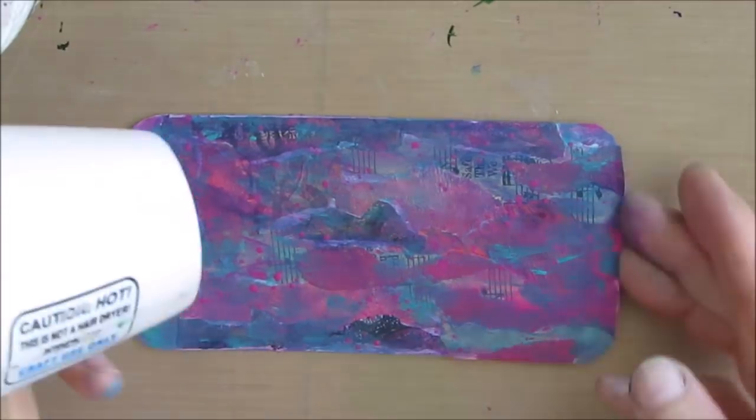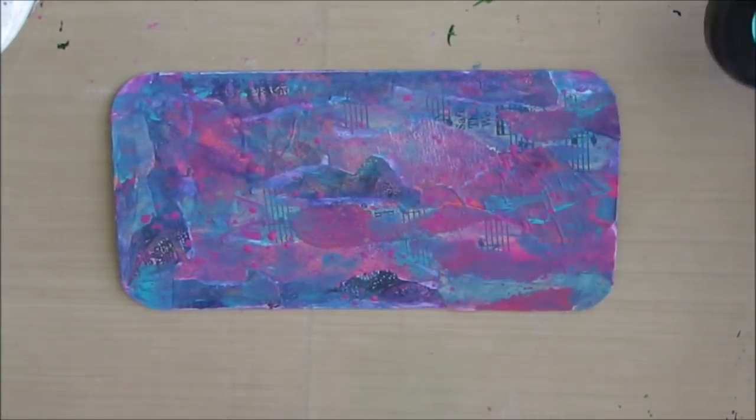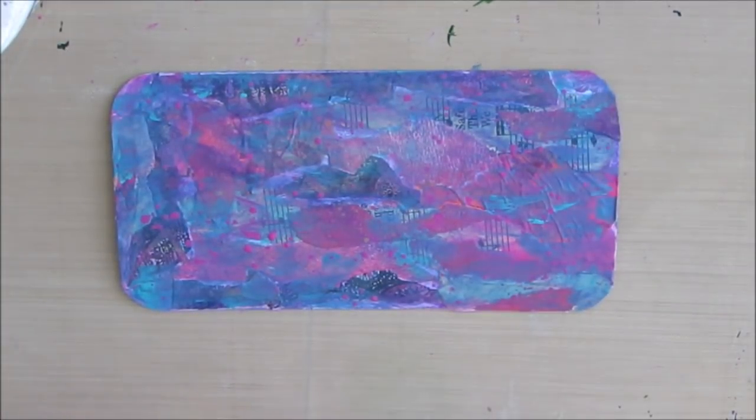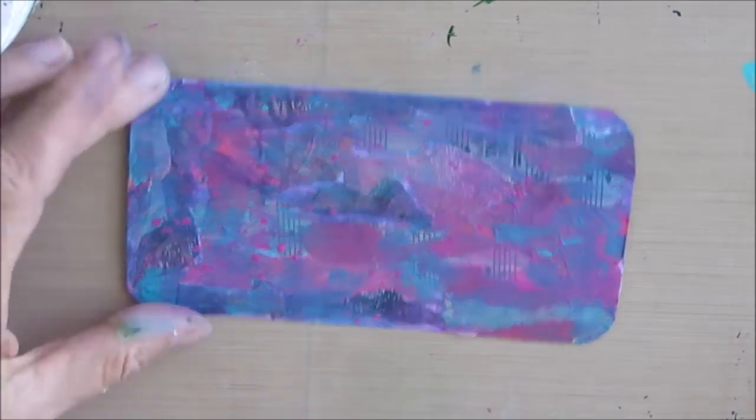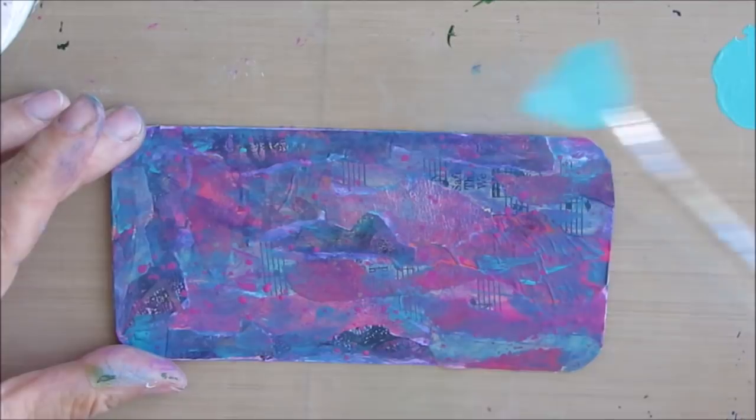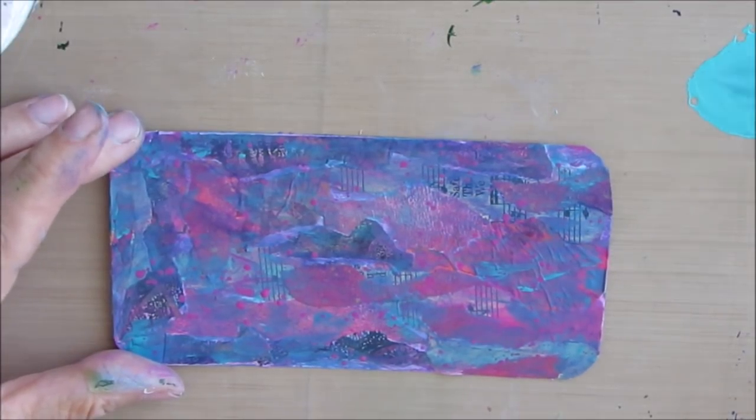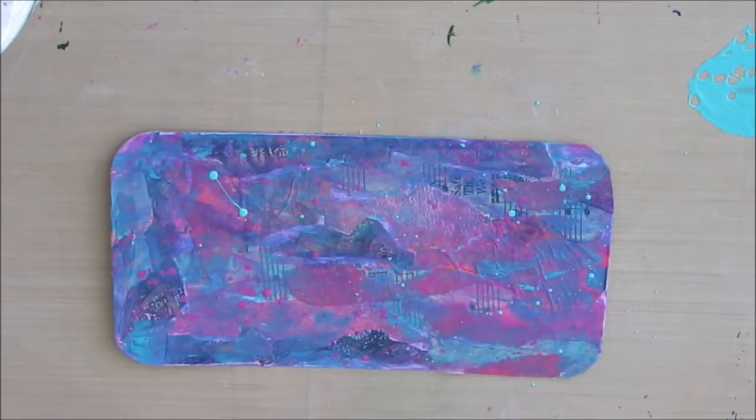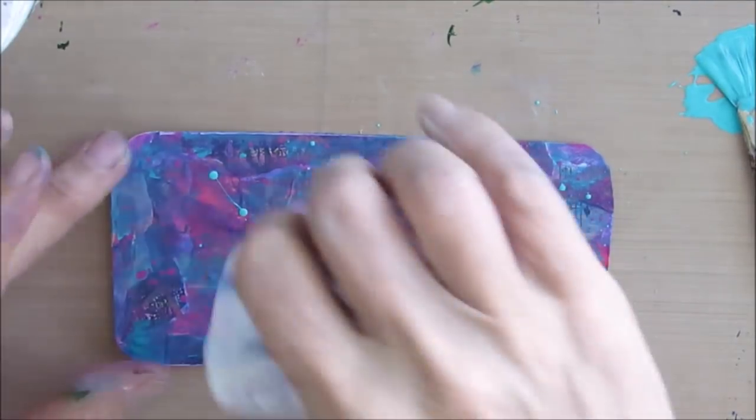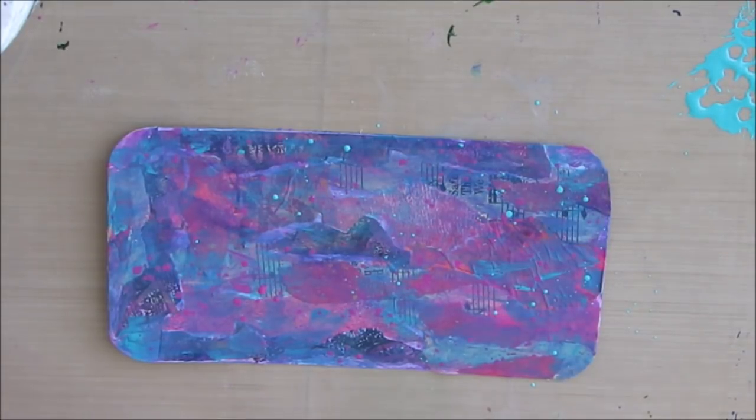When you splatter, the paint tends to be a little bit wetter. It takes a little bit longer to dry. And here I go splattering with the aqua. This light aqua and magenta, when you mix them together, make a lovely purple, which is what you see here. And I'm splattering with my fan brush.